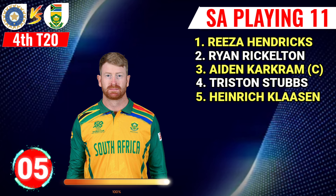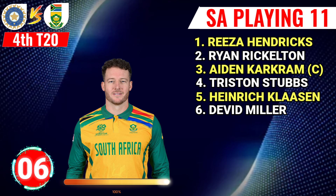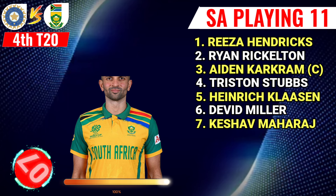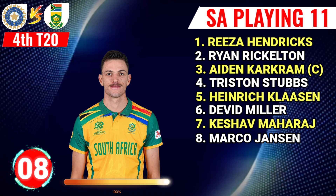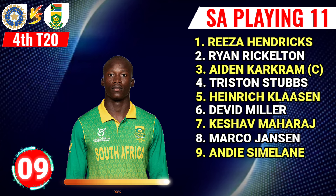Number 5: Heinrich Klaasen, wicketkeeper batter. Number 6: David Miller, left hand batter. Number 7: Keshav Maharaj, right hand all-rounder. Number 8: Marco Jansen, left hand all-rounder. Number 9: Andile Simelane, right hand fast bowler.